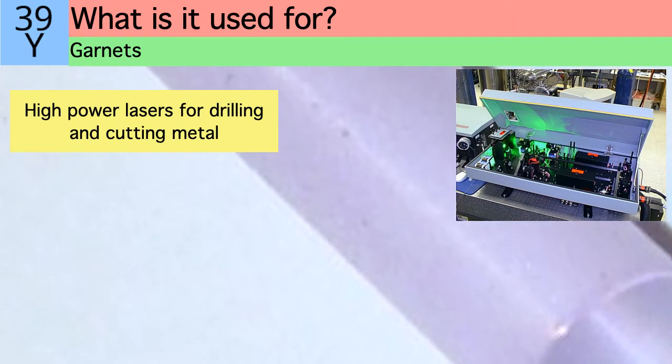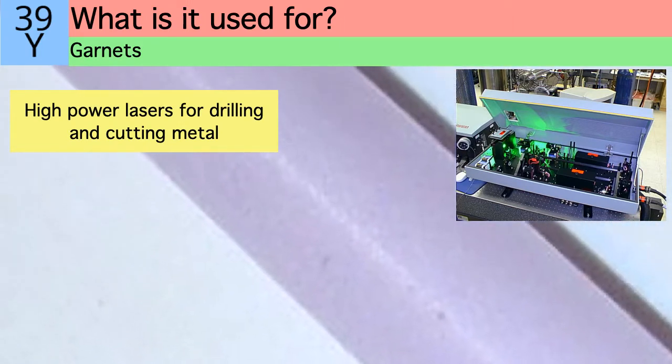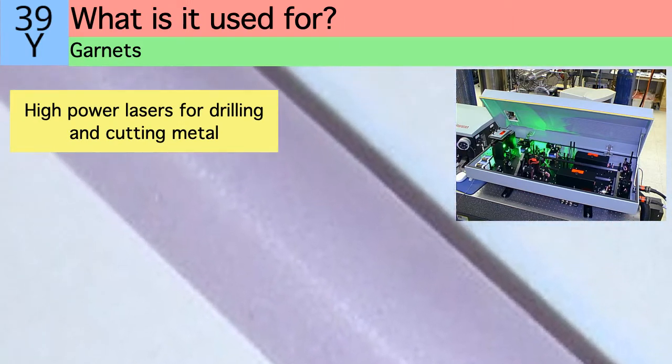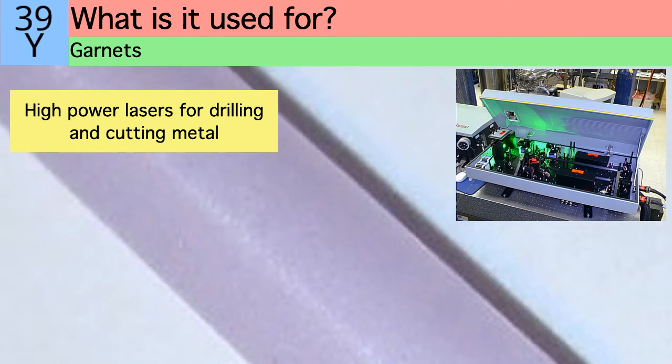Yttrium is also used in the production of various garnets, which are very effective microwave filters. These garnets can be combined with dopants such as neodymium in lasers that can operate at high power and are used for drilling and cutting metal.